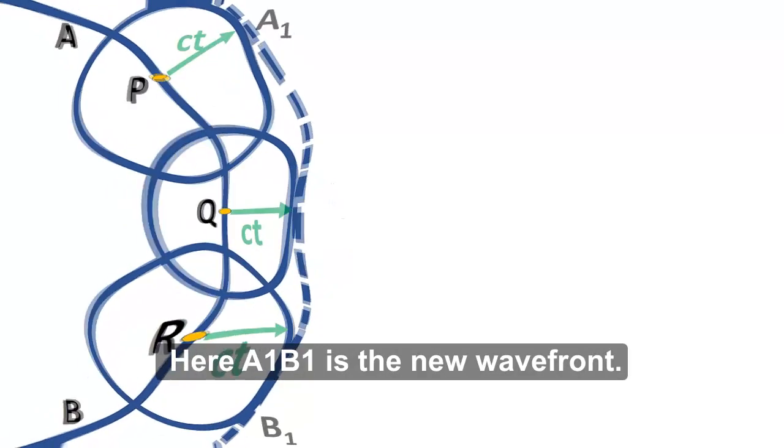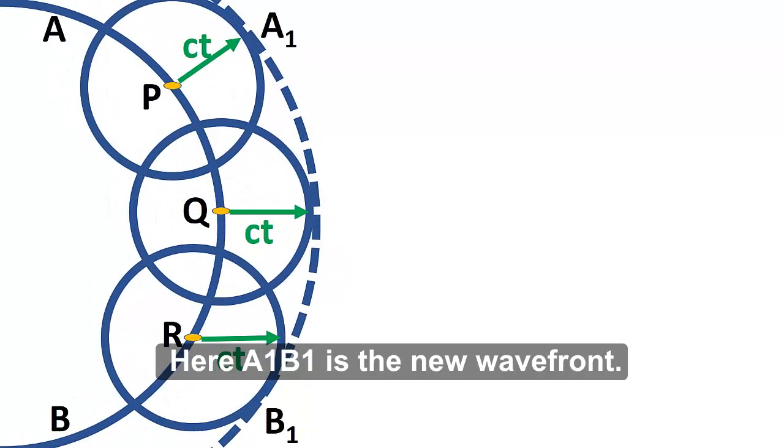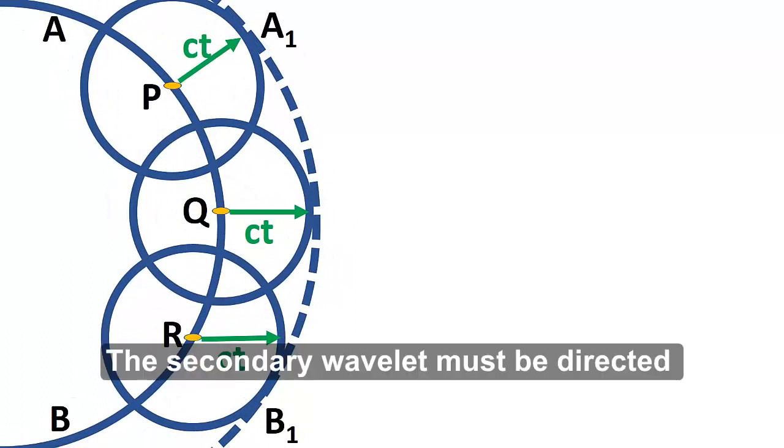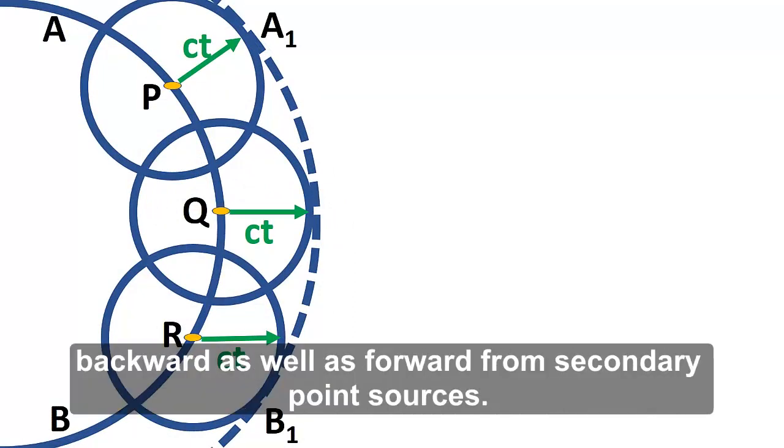Here, A1, B1 is the new wavefront. The secondary wavelet must be directed backward as well as forward from the secondary point sources.